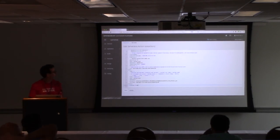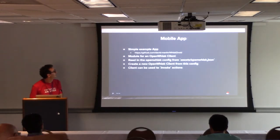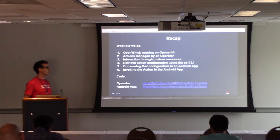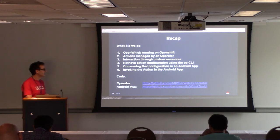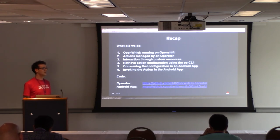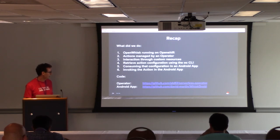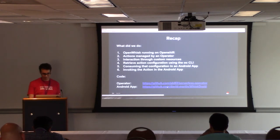Just a quick recap of what we did: we have OpenWhisk running on OpenShift (that already worked, thanks to Project ODD); we now have an operator that manages our actions; we interact with it by creating instances of custom resources; we retrieve configuration using the OpenShift CLI tools; and that configuration is consumed in an Android app to invoke the action. The code is all available — the operator using the Operator SDK and David's Android app repository. Thank you very much.